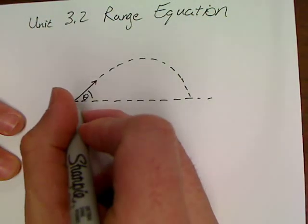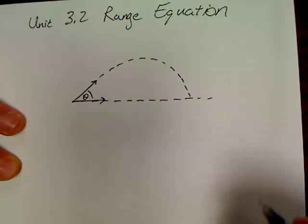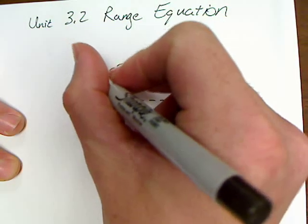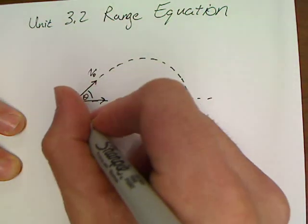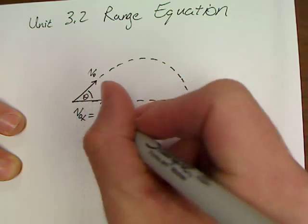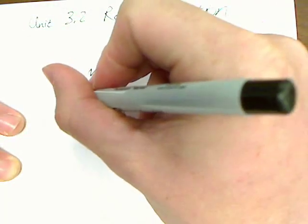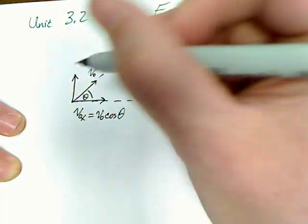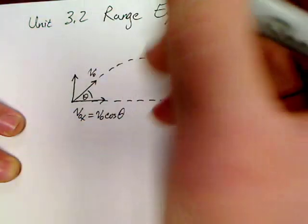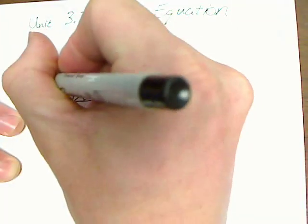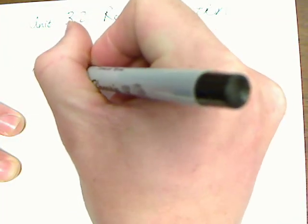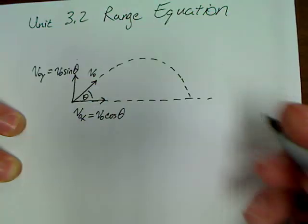You see, when we go to work a problem, the first thing we'd probably do is try and find our V0x. And V0x is equal to V0 cos θ. We would then, secondly, as you've heard me on other videos say, we seek to find V0y. V0y is equal to V0 sin θ.